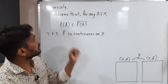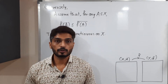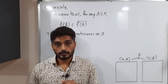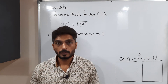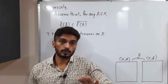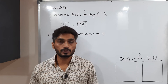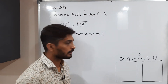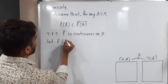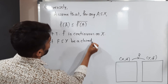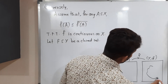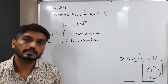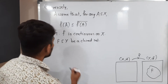For the converse part, we assume the condition f(Ā) ⊆ f(A)̄ and must prove that f is continuous on X. Among the several definitions of continuity — epsilon-delta, open sets, and closed sets — we will use the closed set definition: if F is closed in Y and f⁻¹(F) is closed in X, then f is continuous. So let F ⊆ Y be a closed set. We need to prove f⁻¹(F) is closed in X.